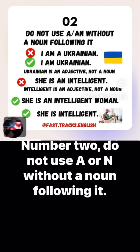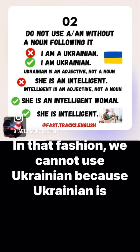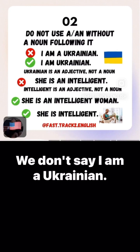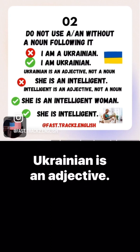Number two: do not use a or an without a noun following it. For example, 'I am a Ukrainian' — we cannot use it that way because Ukrainian is an adjective. We don't say 'I am a Ukrainian.' We say, 'I am Ukrainian.' Ukrainian is an adjective, not a noun.